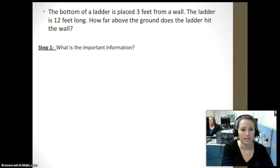The first thing that you want to think about is what is the important information. So let's start at the word problem. The bottom of a ladder—I think that the fact that we have a ladder is very important. So I'm just going to highlight the word ladder. The next thing is placed three feet from the wall. A lot of times the numbers are very important. The ladder is 12 feet long. So that's our three pieces of important information.